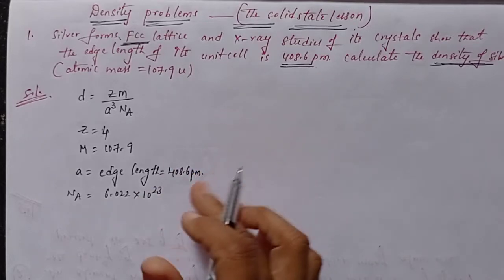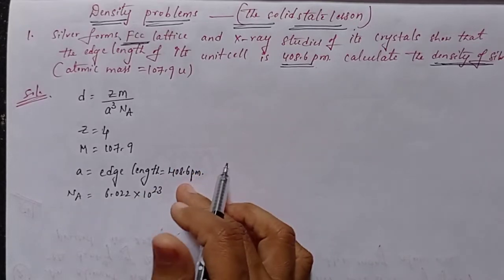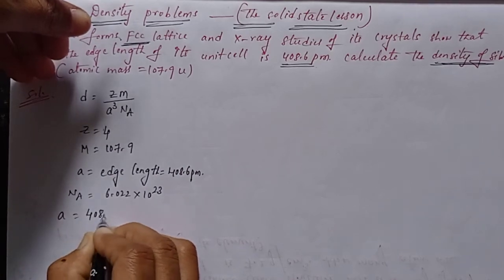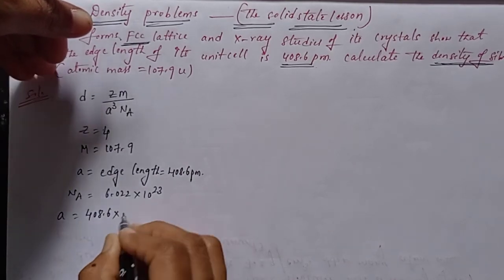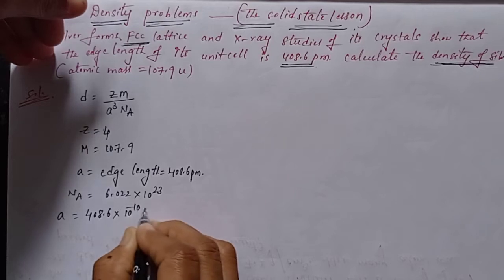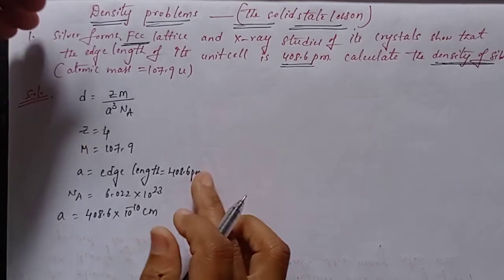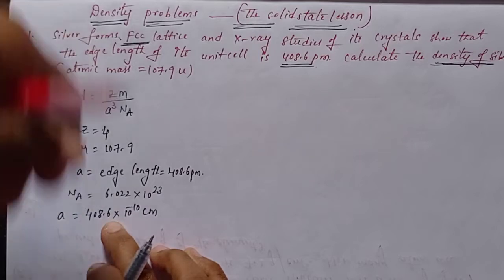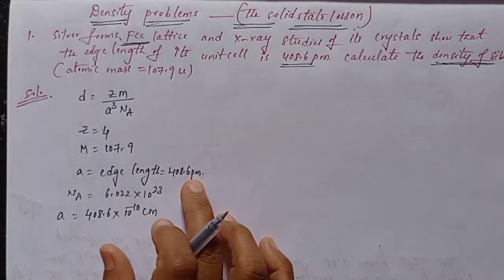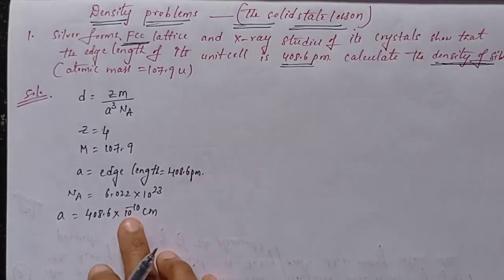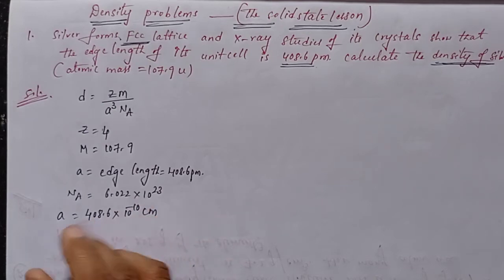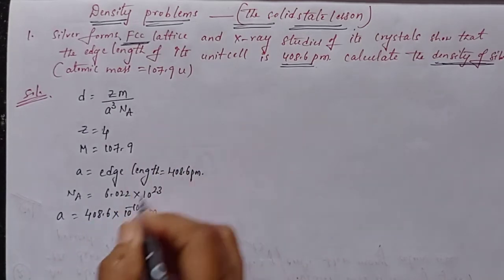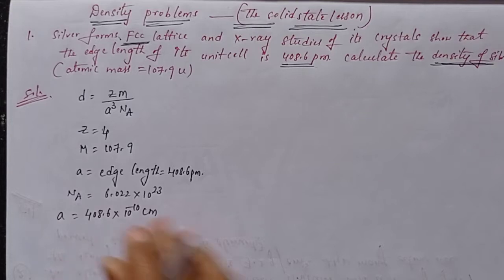So a is equal to 408.6 picometers. Since 1 picometer equals 10⁻¹⁰ centimeters, we write a = 408.6 × 10⁻¹⁰ cm. Now we substitute all values into the density formula.